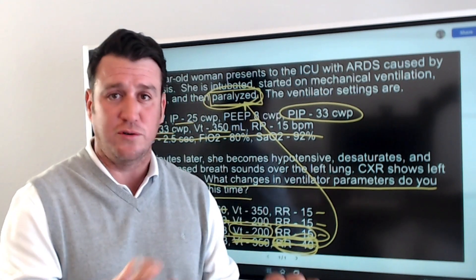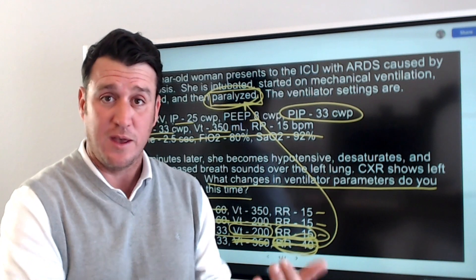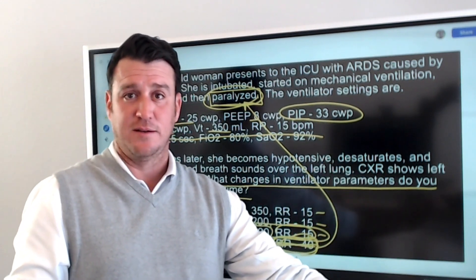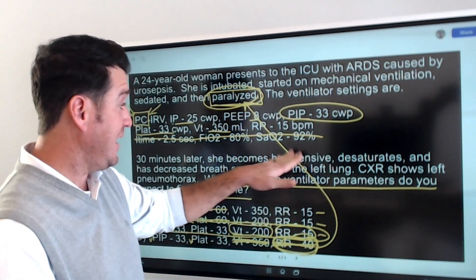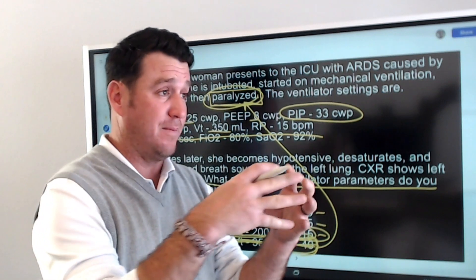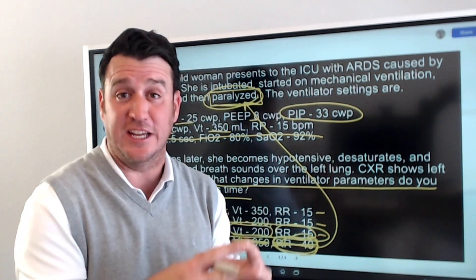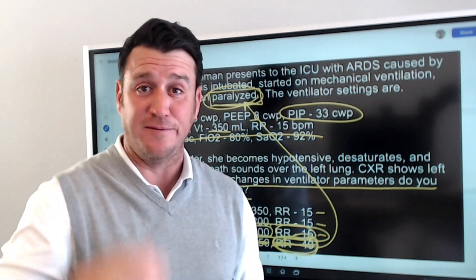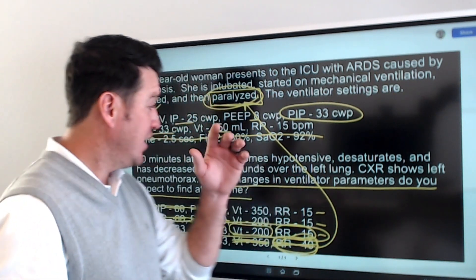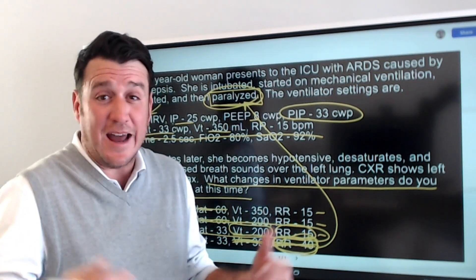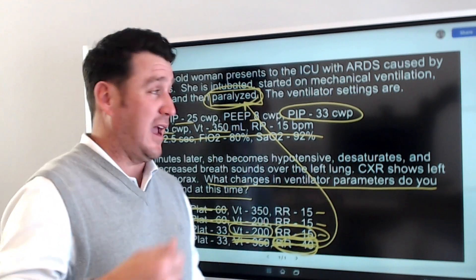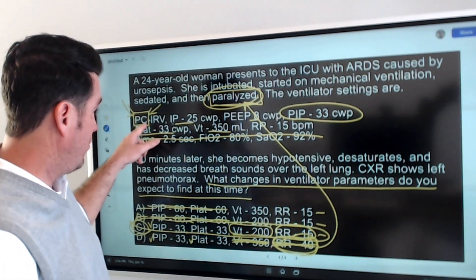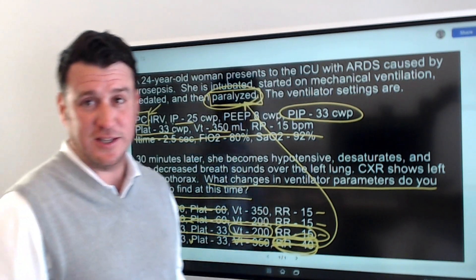This question is about a multitude of things — it's about pressure control, it's about pneumothoraxes. One of the things that could have been asked is how would you treat this? Because you have hypotension and a pneumothorax, all of this together is describing a tension pneumothorax. You would want to needle decompress between the second and third intercostal space mid-clavicularly, or perhaps insert a chest tube. Typically when they're talking tension pneumo, they'll needle decompress first. But for this question — what ventilator parameters are going to change — the key is understanding pressure control: pressure stays the same, volume varies. The answer is C.